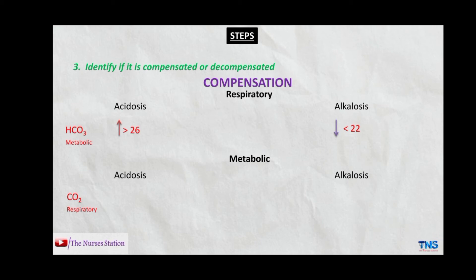For example, in metabolic acidosis the respiratory system compensates by decreasing the amount of carbon dioxide in the body. In metabolic alkalosis, the respiratory system increases the amount of carbon dioxide so that more bases are neutralized and the pH returns to the normal range.